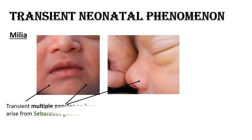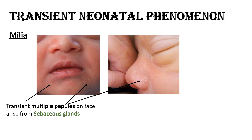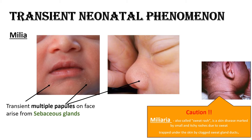Let us start with milia. As you can see, there are multiple papules over the face. These are thought to arise from sebaceous glands. One must remember the differences between milia and miliaria. Miliaria, also called sweat rash, is a skin disease marked by small and itchy rashes due to sweat trapped under the skin from clogged sweat gland ducts. Milia is physiological whereas miliaria is pathological. Milia involves sebaceous glands whereas miliaria involves sweat glands.